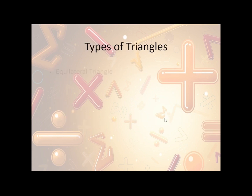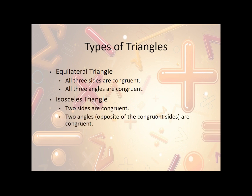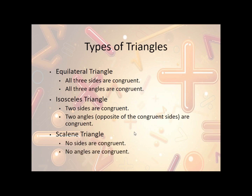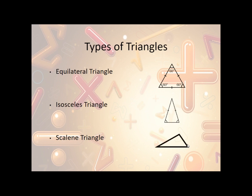Now, the different types of triangles. The first kind is an equilateral triangle, which has all three sides congruent and all three angles congruent. Isosceles triangles have two sides congruent and two angles that are opposite of those sides congruent. And lastly, we have a scalene triangle where no sides are congruent and no angles are congruent. Equilateral looks like this — all the sides are the same and all the angles are the same. An isosceles triangle has this side and this side the same, and the opposite angles the same. Scalene is just kind of random — all the sides and all the angles are different.